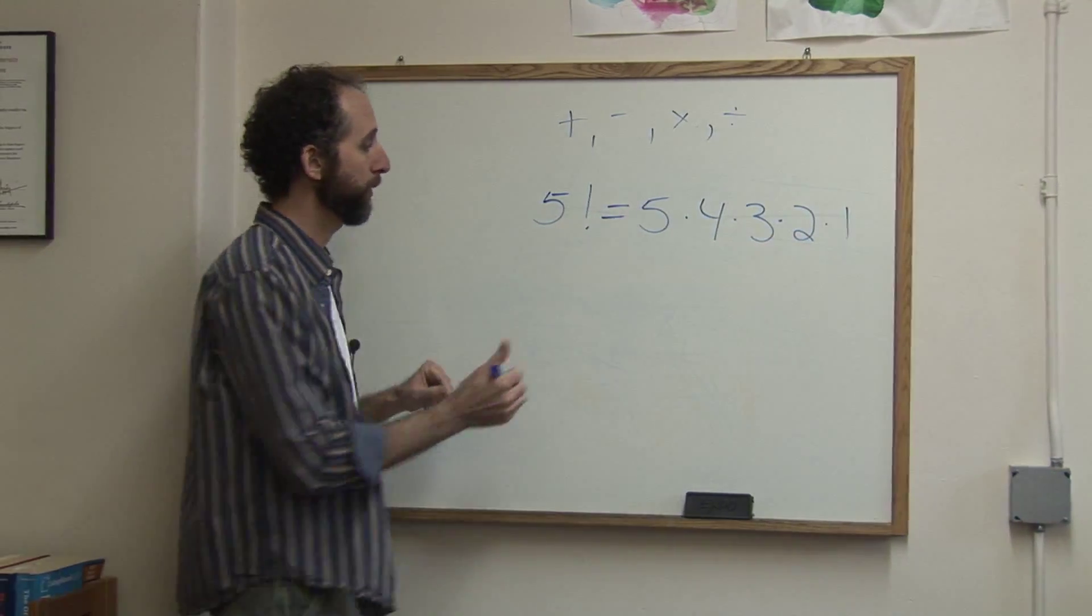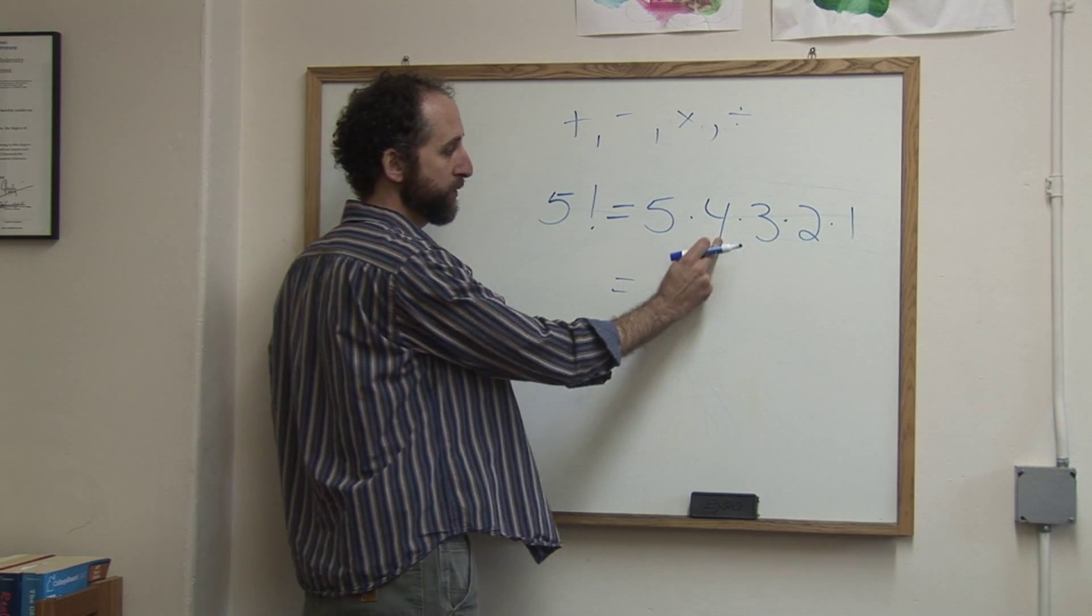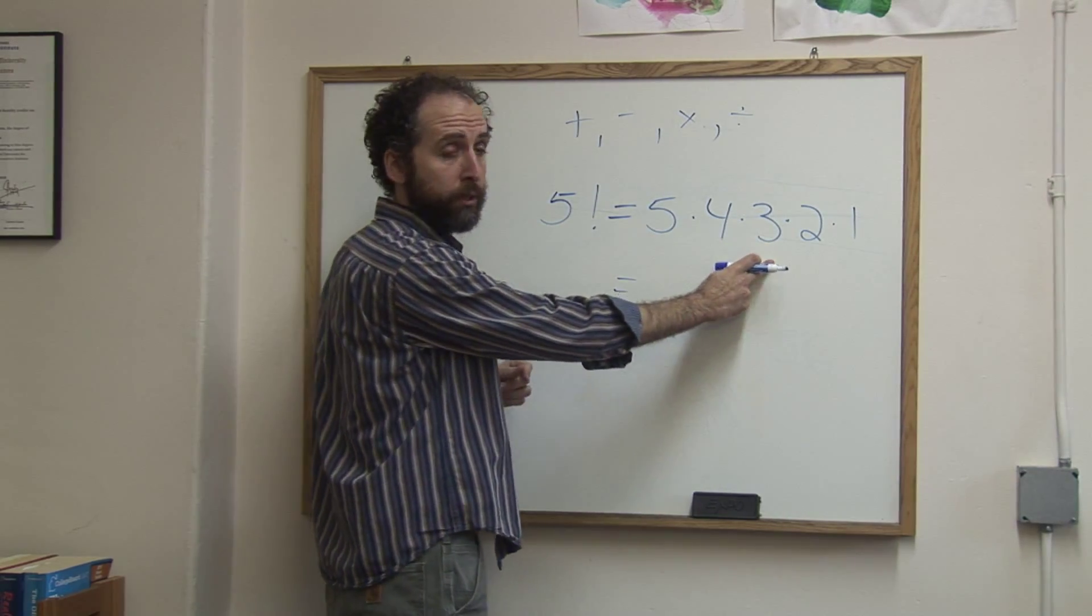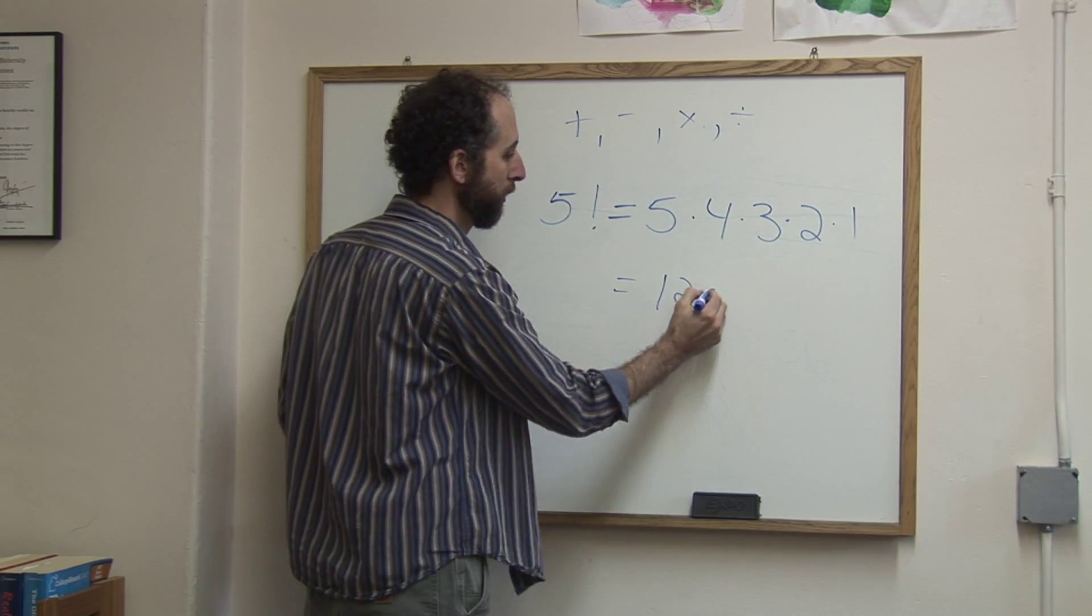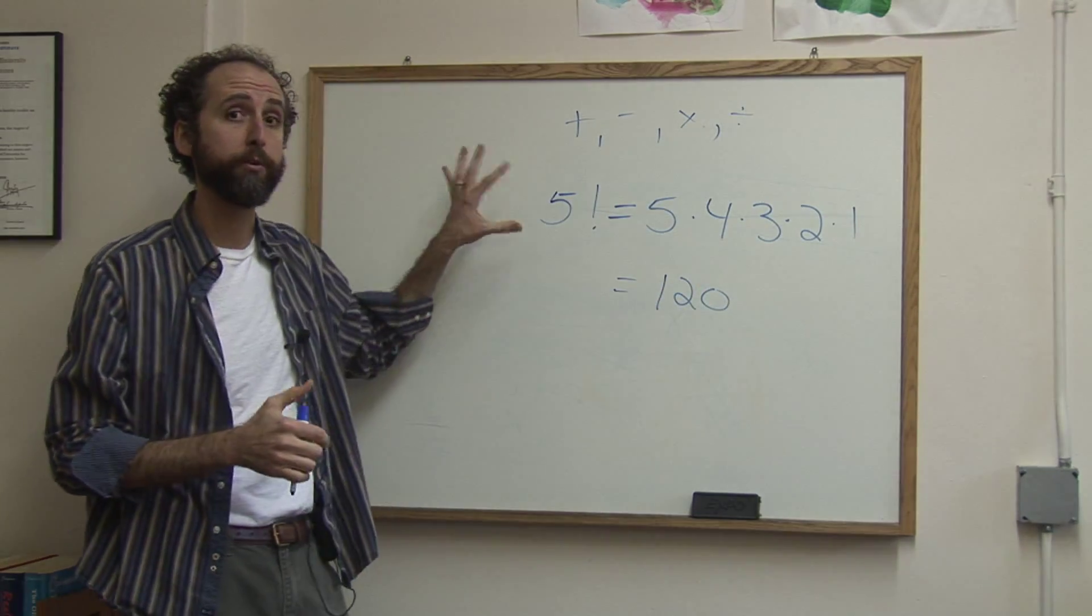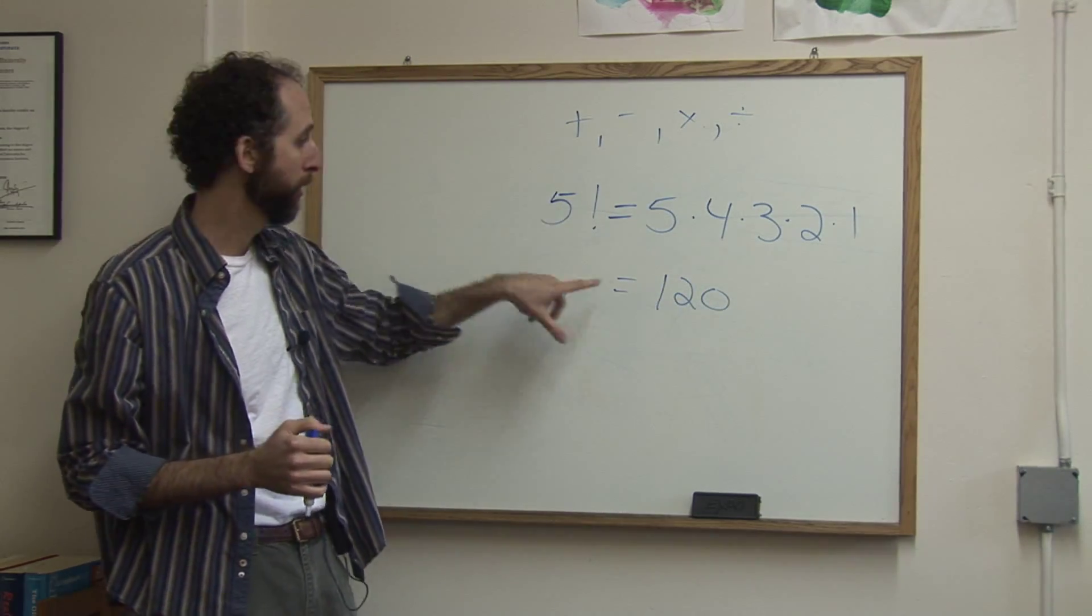So 5 factorial is going to be 5 times 4, which is 20, times 3, which is 60, times 2, which is 120. So 5 factorial is just another name for it. It's like a synonym for 120.